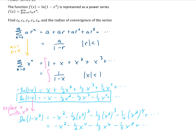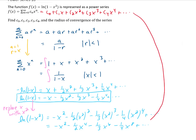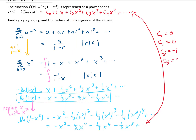To answer the question, we should inspect the general power series. Writing out the first couple of terms, c0 represents the constant, c1 the coefficient on x, c2 the coefficient on x squared, and so on. Comparing to our result: our result has no constant, so c0 is 0. There's no linear term, so c1 is 0. The x squared term has a negative 1, so c2 is negative 1. There's no x cubed term, so c3 is 0. And the x to the fourth term has negative 1 half, so c4 is negative 1 half. That answers the first question — we have found the first five coefficients.